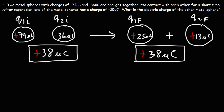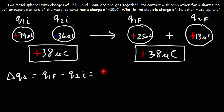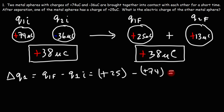Here's a side question: how much electric charge was transferred, and from where was it transferred? To calculate the amount of electric charge transferred from one sphere to another, we calculate the change in Q. The change in Q1 is Q1 final minus Q1 initial: positive 25 minus positive 74 microcoulombs, which gives us negative 49 microcoulombs.